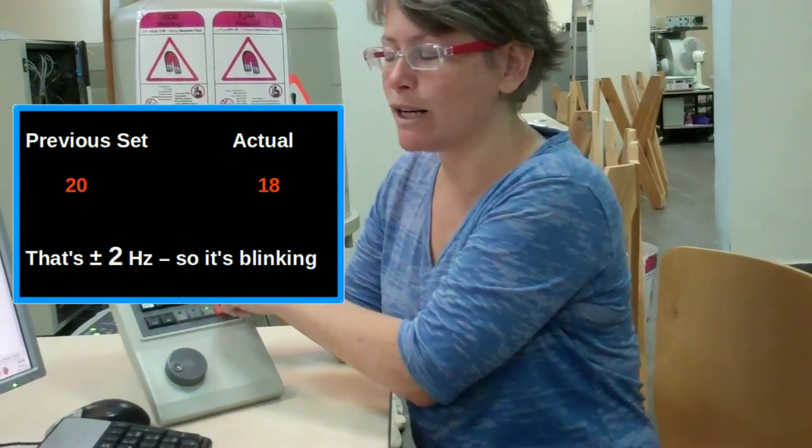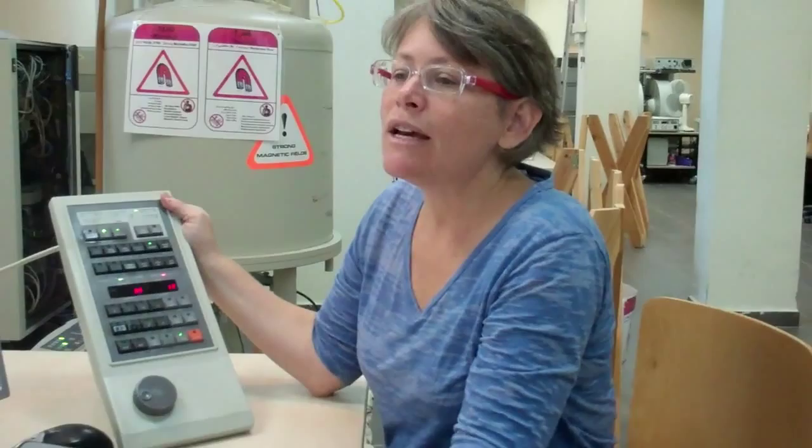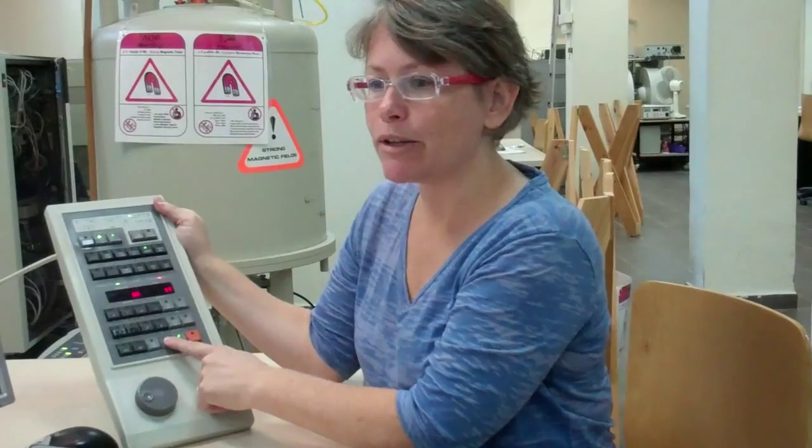Here it's plus or minus 20 hertz, and so the spin rate button is blinking. To deactivate the spin rate, spin measure button, we press standby here at the bottom middle.